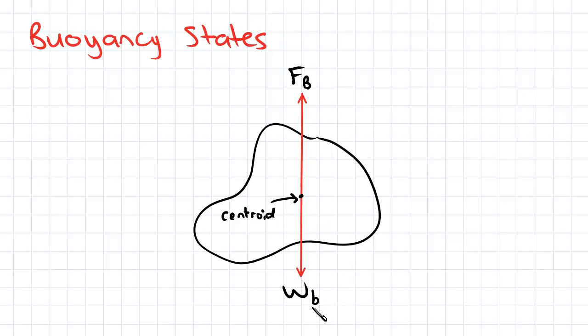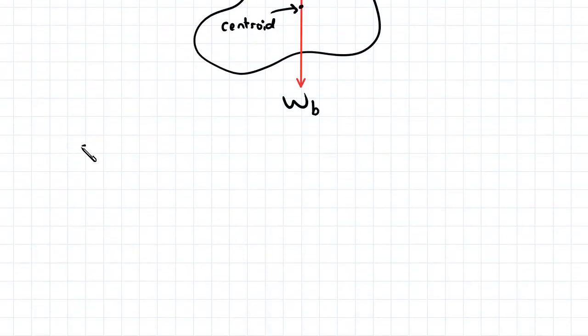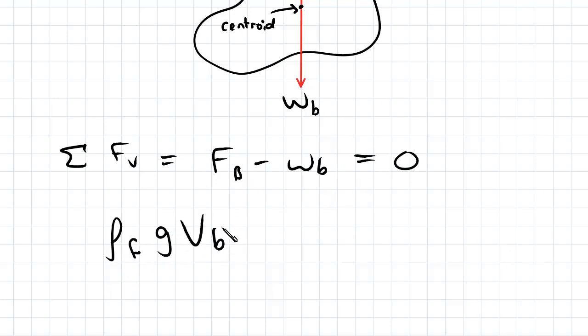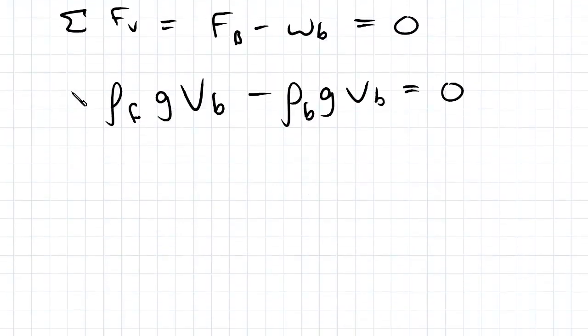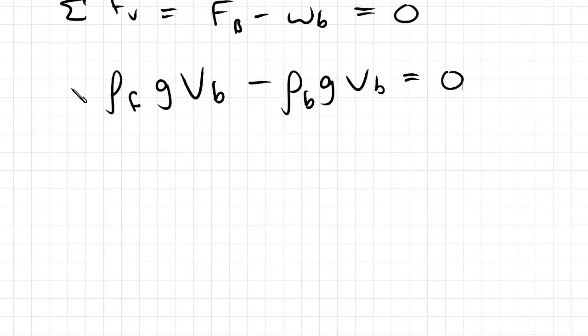That's due to equilibrium, so if we look at the sum of the forces in the y direction, that's FB minus WB equal to zero. We establish that FB was equal to rho_F*g*V_B, that's the volume of the body, and the weight is the density of the body times g times the volume of the body. So we can reduce that down to (rho_F - rho_B)*g*V_B.